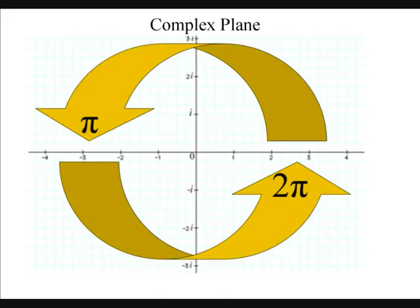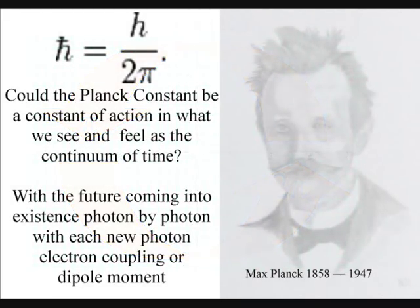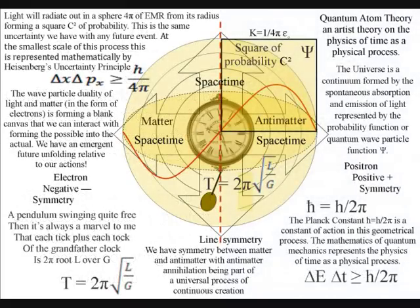This is why the Planck constant is linked with two pi, representing a constant of action in the geometrical process we see and feel as the flow of time.